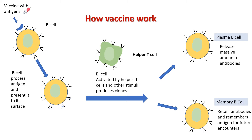The difference is that B cells directly ingest antigen at the site of injection — they don't need macrophages. B cells present antigen particles on their surface, and helper T cells recognize and bind to these antigens. B cells then become activated and create clones like plasma B cells and memory B cells. Plasma B cells produce a massive number of antibodies, while memory B cells retain antibodies and memorize them for future attacks.